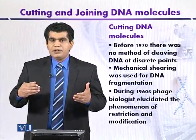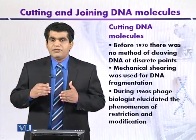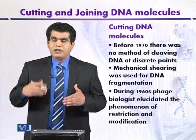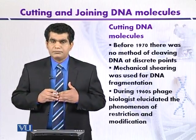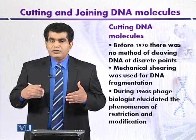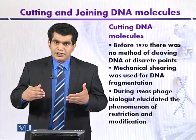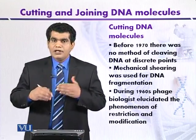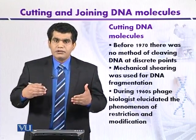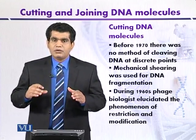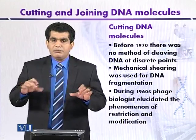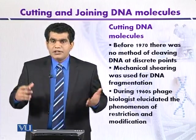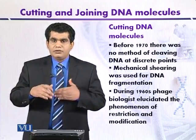The main breakthrough came in the 1970s, when phage biologists elucidated the pathways and mechanisms of restriction and modification. One group of scientists was able to isolate restriction enzymes from E. coli K12 strain. It was thought that this would be useful in the field of gene manipulation, because now scientists could cut DNA using biochemical enzymes. But later on, it was realized that this also had no practical benefit.